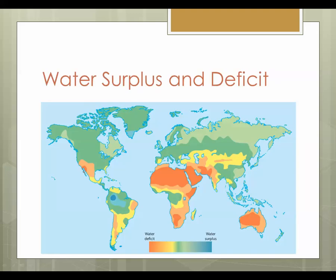If we look at this at a global scale, we have this map in front of us which looks at water surplus and water deficit issues. Some areas of the world experience large amounts of rainfall but still end up in water deficit due to the amount of heat. One example is areas on the equator, in particular Ethiopia and Kenya, where they have large amounts of rainfall but it's seasonal, and therefore high temperatures evaporate large amounts of water.